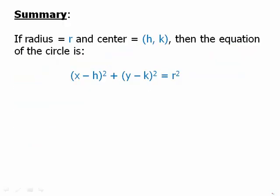In summary, if the radius is r and the center is (h, k), then the equation of the circle is (x - h)² + (y - k)² = r². I would urge you: do not simply memorize this by rote, but understand the argument that produced this equation. That will make you much more confident in using it.